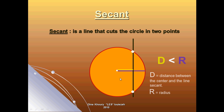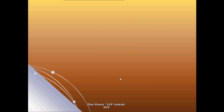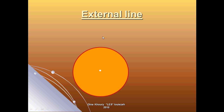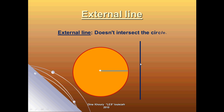The third case is the external line, where you have a circle C with center O and its radius. When you construct a line that is outside the circle and doesn't intersect it at any point, we call it an external line. Here the distance between the center and this line is greater than the radius. When we talk about distance, it means the shortest distance between a point and a line, which is the perpendicular.